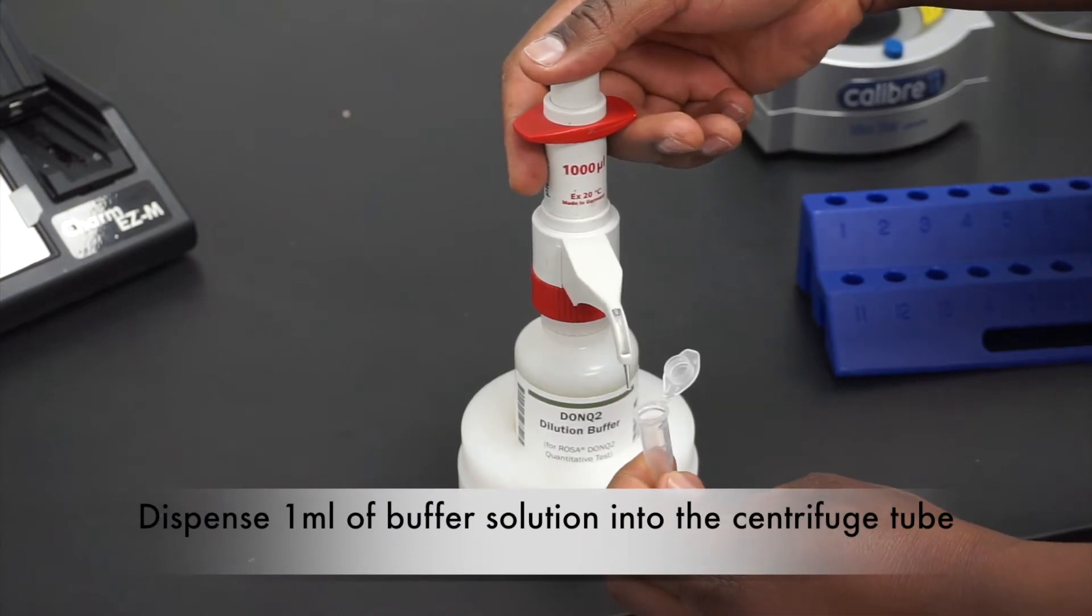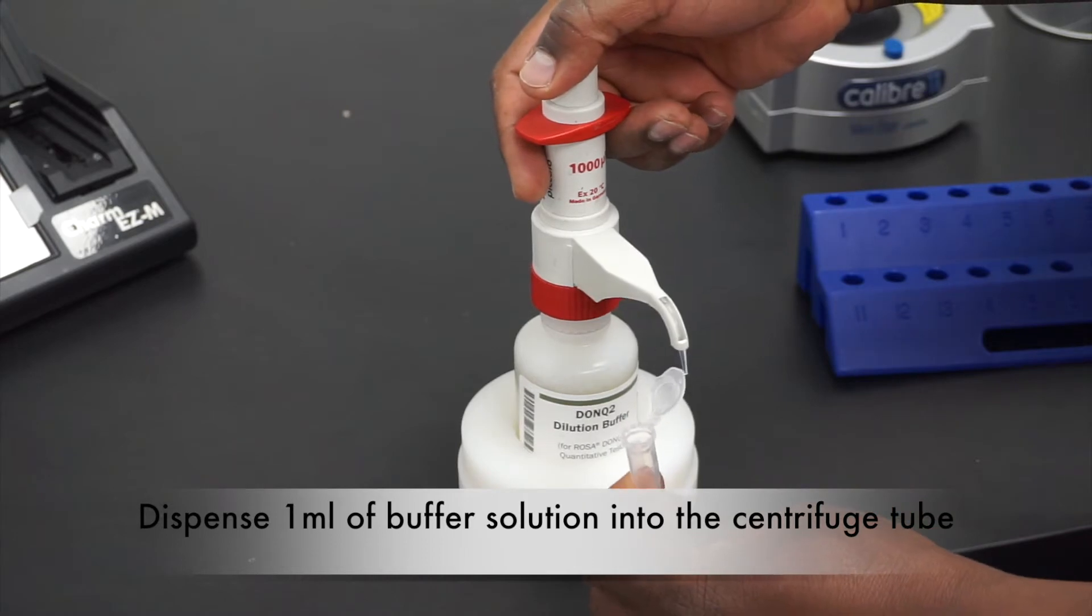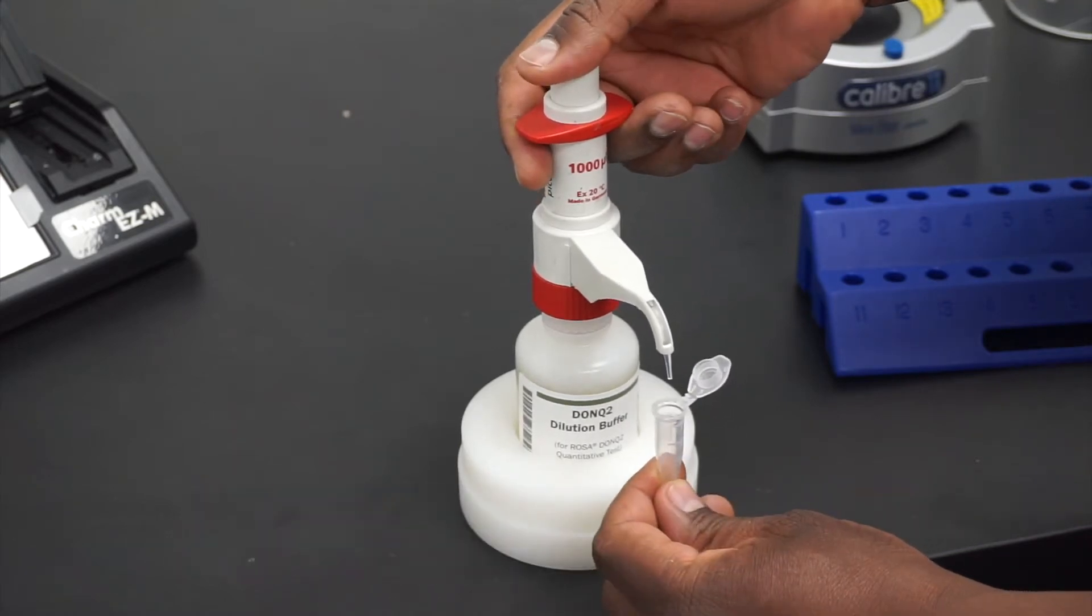To start with, dispense one milliliter of DonQ dilution buffer into a centrifuge tube.